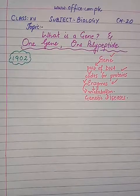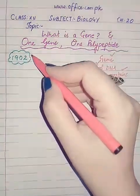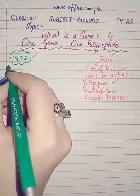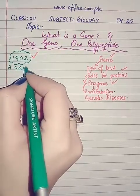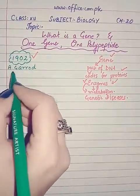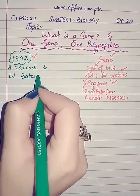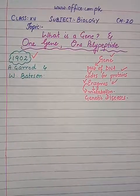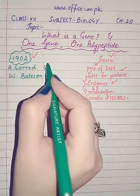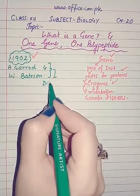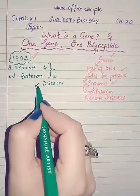That was a brief introduction about a gene. Now, coming to the main point: the year 1902. In this year, two scientists were observing some of their patients, and what they observed was that there are certain diseases that run in families.